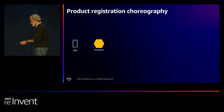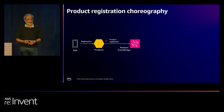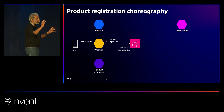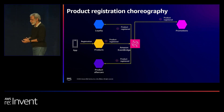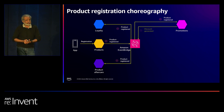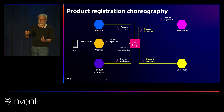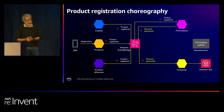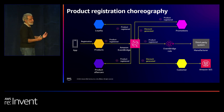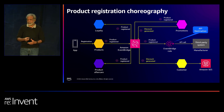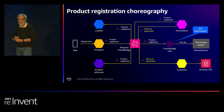So how do we take this into a choreographed event-driven architecture with EventBridge? The app interacts with the product registration service, which emits a 'product registered' event. Suddenly, different services come alive: each one wants to act on that event. EventBridge targets route these events to different services. Once the promotion is computed, a 'discount codes generated' event comes up, and another service sends the email to customers. A third-party manufacturing system can also be invoked using the EventBridge API destination feature.